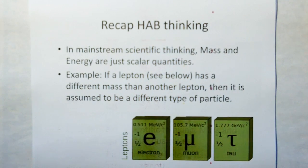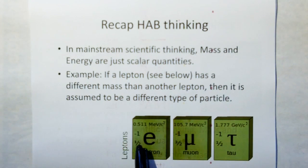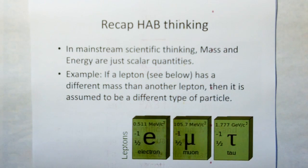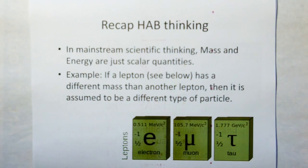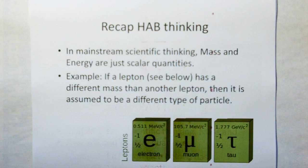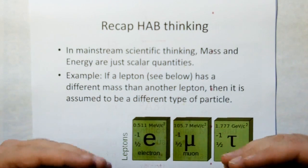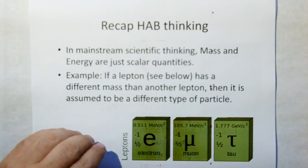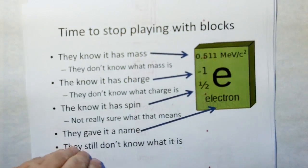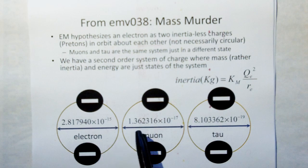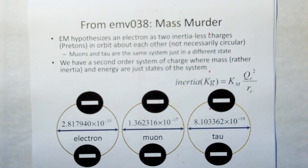In the horse and buggy thinking, mass and energy are just scalar quantities. For example, if a lepton has a different mass than another lepton, it's assumed to be a different type of particle. In ethereal mechanics, inertia, not mass, is just a state of the system. Therefore, it's possible to have the same system with three different states of how it spins to give you three different masses.